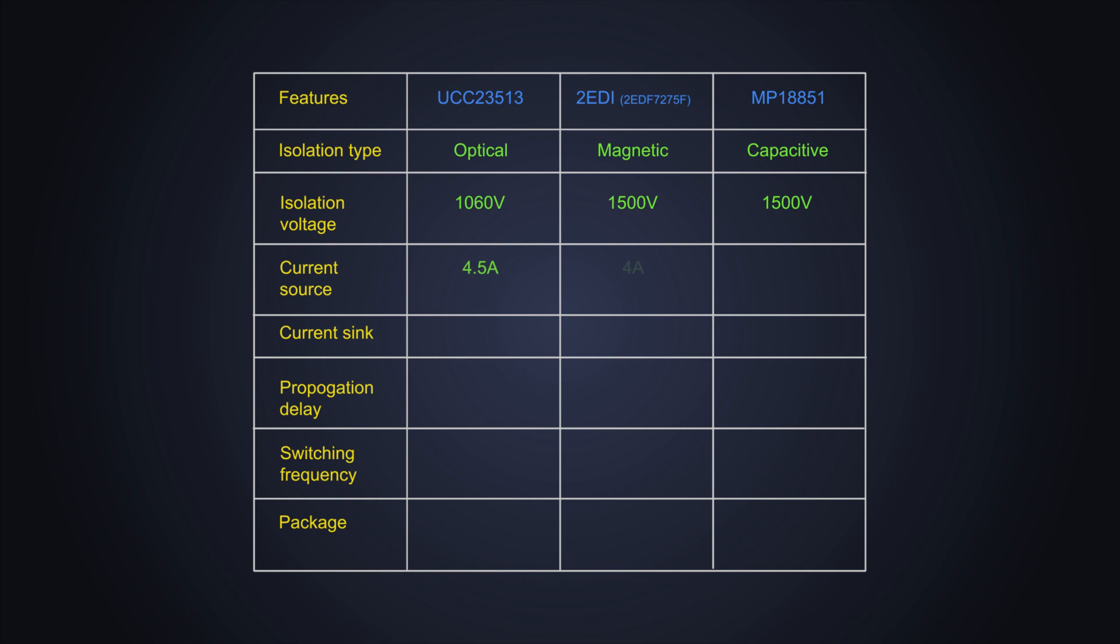Each of them has different current source and current sync capabilities. The propagation delay of the first driver is around 105 nanoseconds and the propagation delay of 2nd driver is around 7-8 nanoseconds and propagation delay of 3rd driver is 50 nanoseconds. As you see, the optical isolation based driver IC has the maximum propagation delay following with the capacitive isolation and then the transformer based isolation technology.